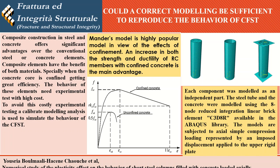Each component was modeled as an independent part. The steel tubes and concrete were modeled using the 8-node reduced integration linear brick element C3D8R, available in the ABAQUS library. The models are subjected to axial compression loading, represented by an imposed displacement applied to the top plate.